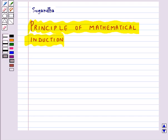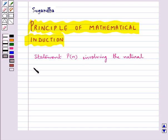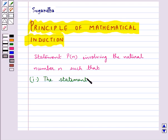To prove such statements, the well-suited principle that is used based on a specific technique is the principle of mathematical induction. According to this, suppose there is a statement P(n) involving the natural number n such that the first condition is: the statement is true for n equal to 1, that is, P(1) is true.